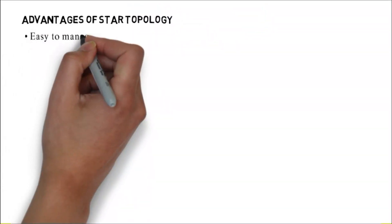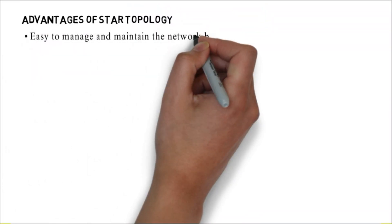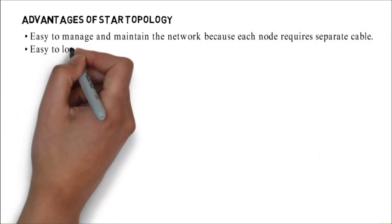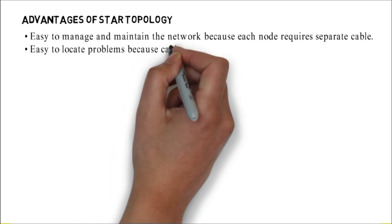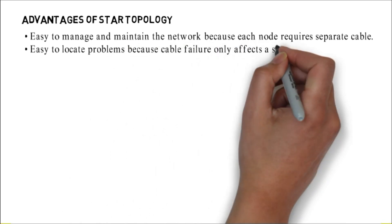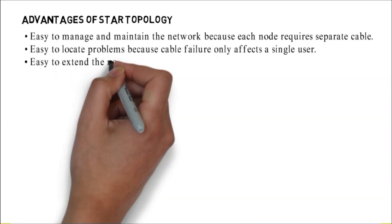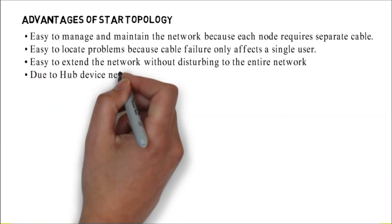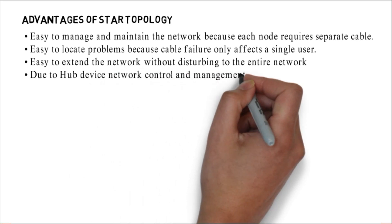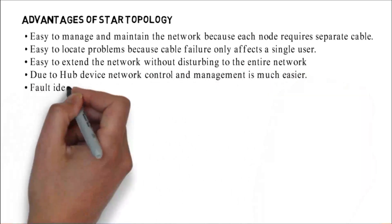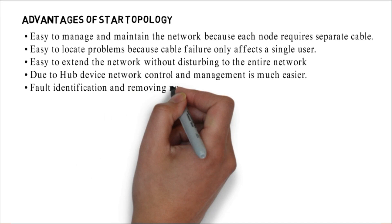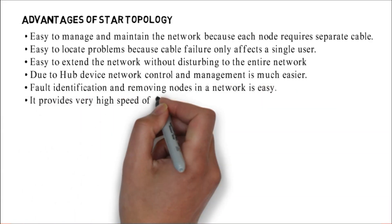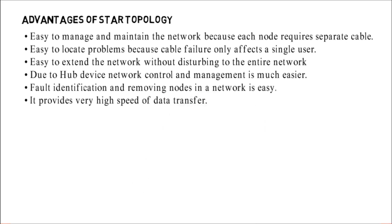Advantages of star topology: easy to manage and maintain the network because each node requires separate cable, easy to locate problems because cable failure only affects a single user, easy to extend the network without disturbing the entire network, due to hub device network control and management is much easier, fault identification and removing nodes in a network is easy, it provides very high speed of data transfer.